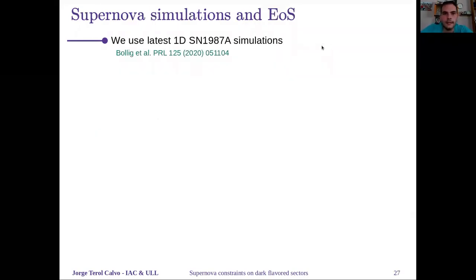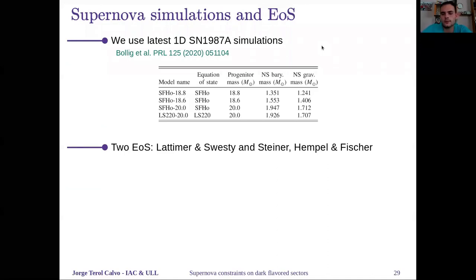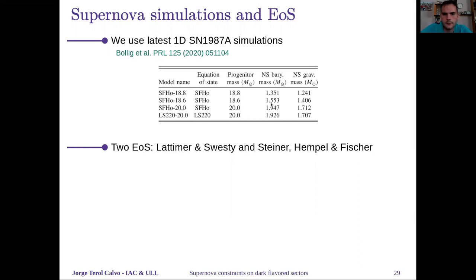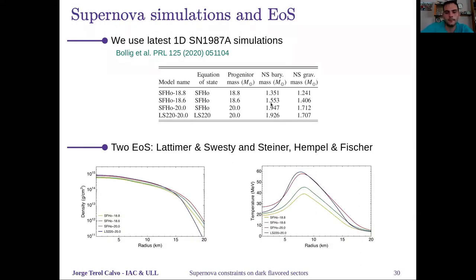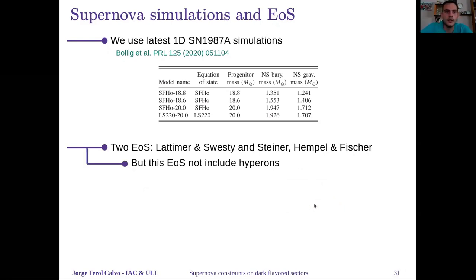To compute this luminosity, we have used the latest one-dimensional supernova simulations, which include two different equations of state: Lattimer Swesty and Steiner Fischer Hempel, with different masses for the SFHO that give different masses of the neutron star produced after the supernova. One gets the radial profiles—this, for example, one second after the bounce. One can see that the difference in density is not very large, but in temperature, the heavier neutron stars produced are hotter than the lighter ones.